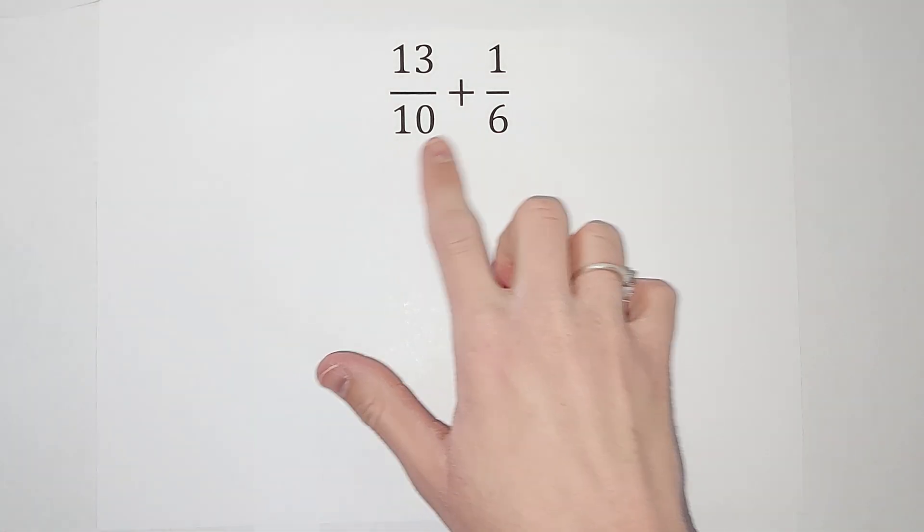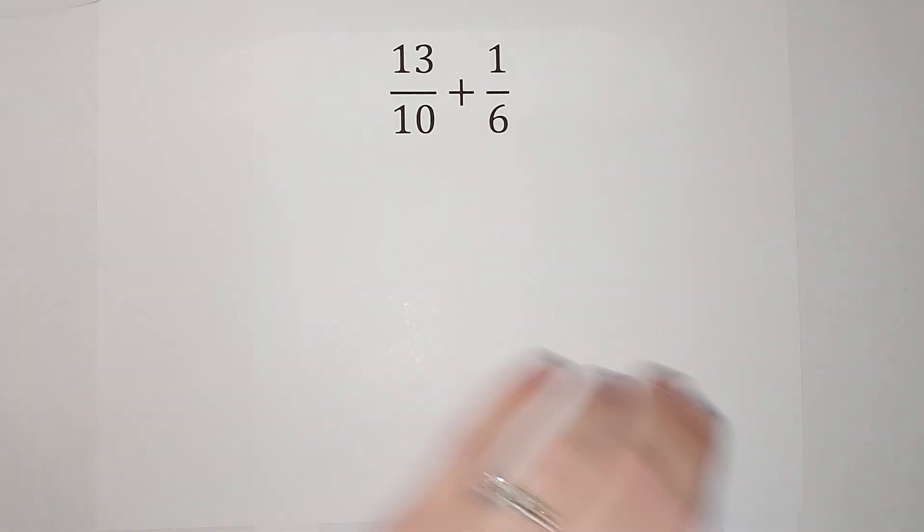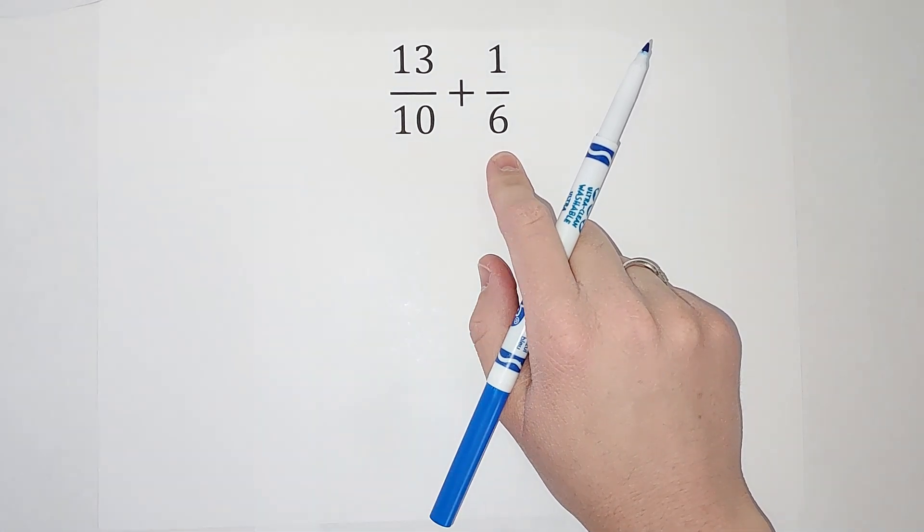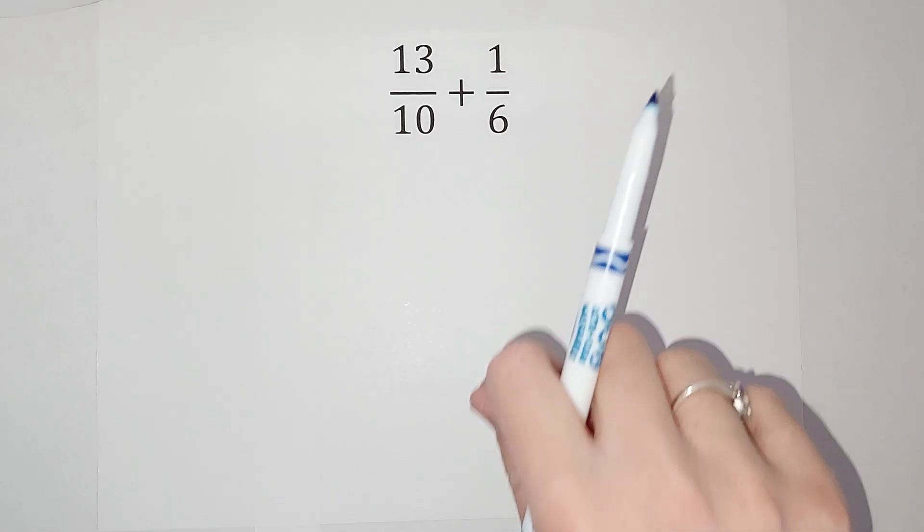Hey guys, we're going to add an improper fraction and a normal fraction, which is basically like adding two fractions. The improper fraction has the top number bigger than the bottom. To add these, our denominators have to be the same. If you're wondering what happens if we don't get them the same, I'll link a video in the corner.